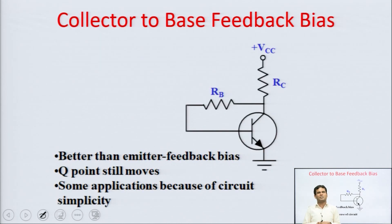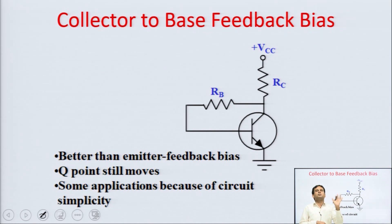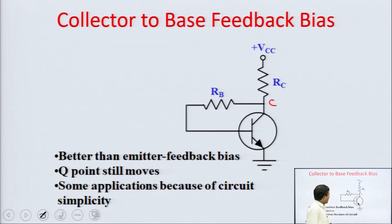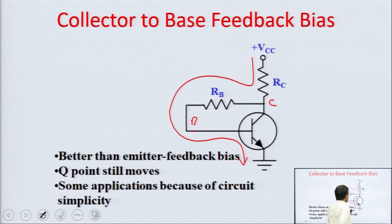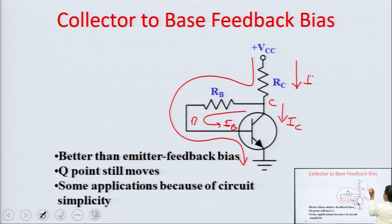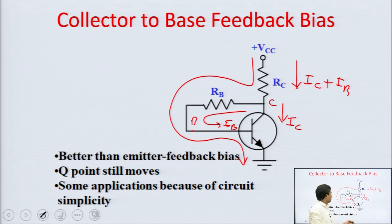Now I am going to discuss the other bias technique: collector-to-base feedback bias. In this technique there are only two resistances, like fixed bias. In fixed bias RB was connected to VCC, but here it is connected to the collector point — that is why it is called collector feedback bias. The current distribution is: RC carries IC plus IB, because applying KCL at the collector node gives outgoing currents IC and IB, so incoming current through RC is IC plus IB.